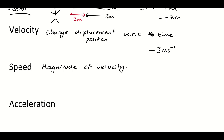The speed doesn't depend on direction — it's just the magnitude of velocity. We write it using absolute value notation: the magnitude of minus 3 metres per second is 3 metres per second. So speed is just the measurement of how fast they're travelling, regardless of the direction.